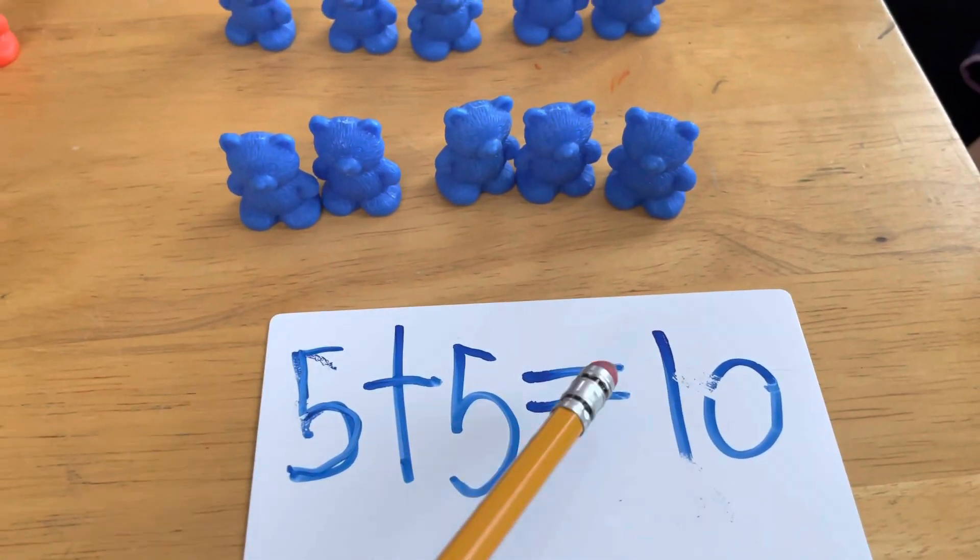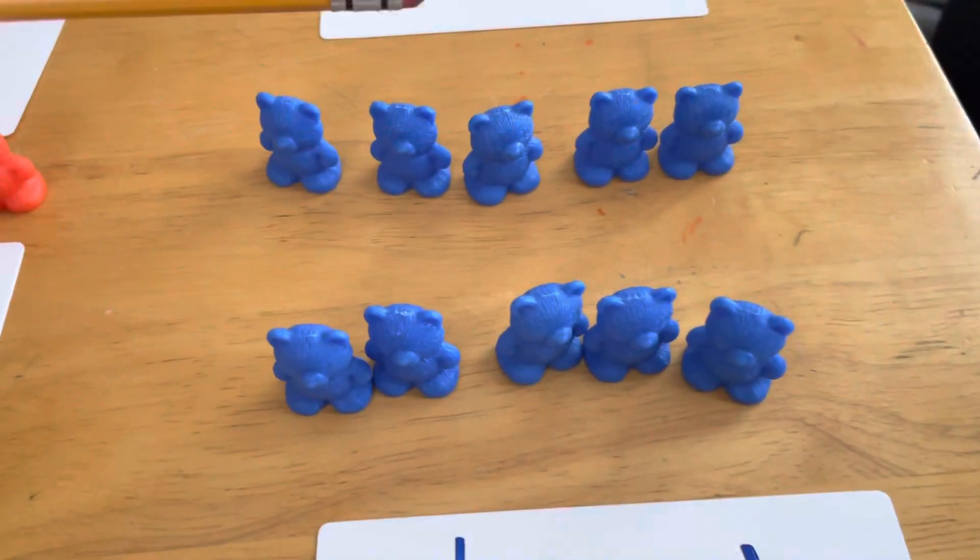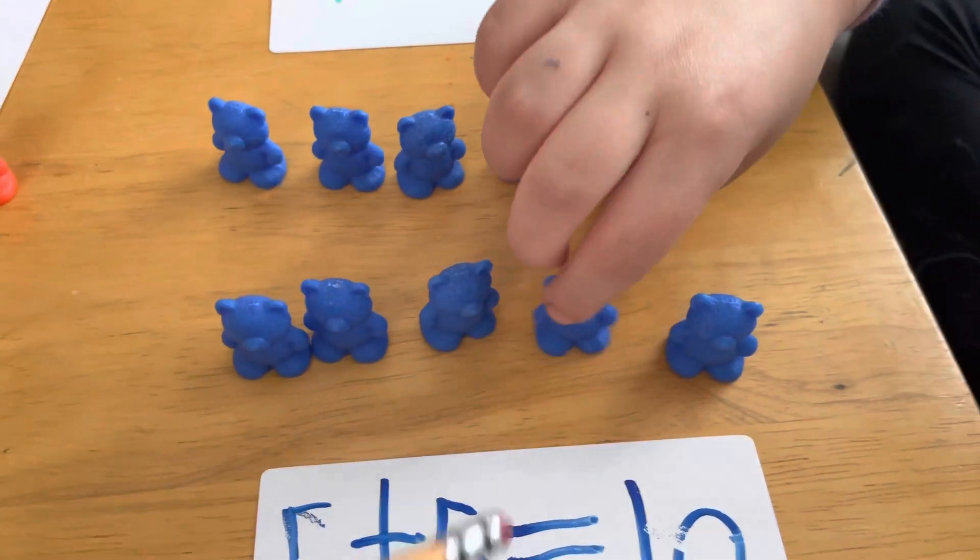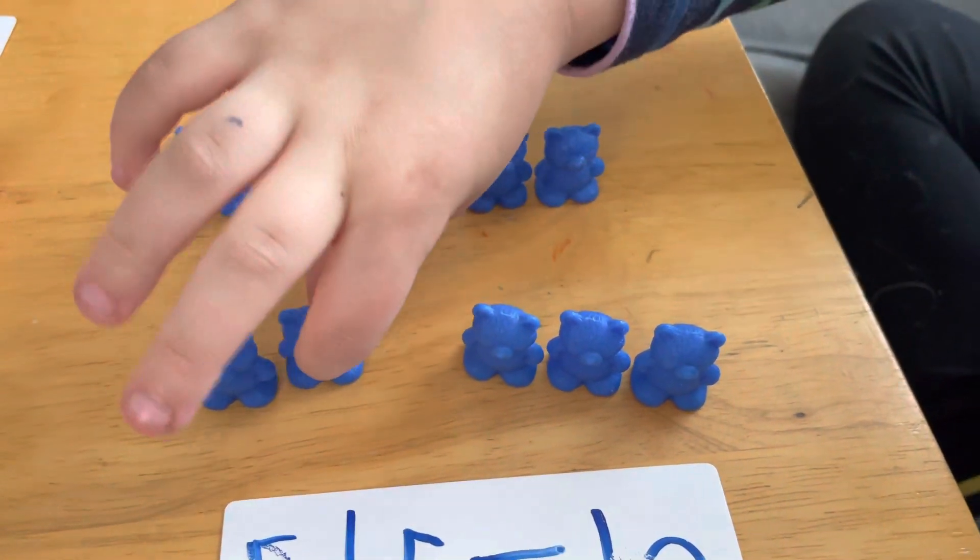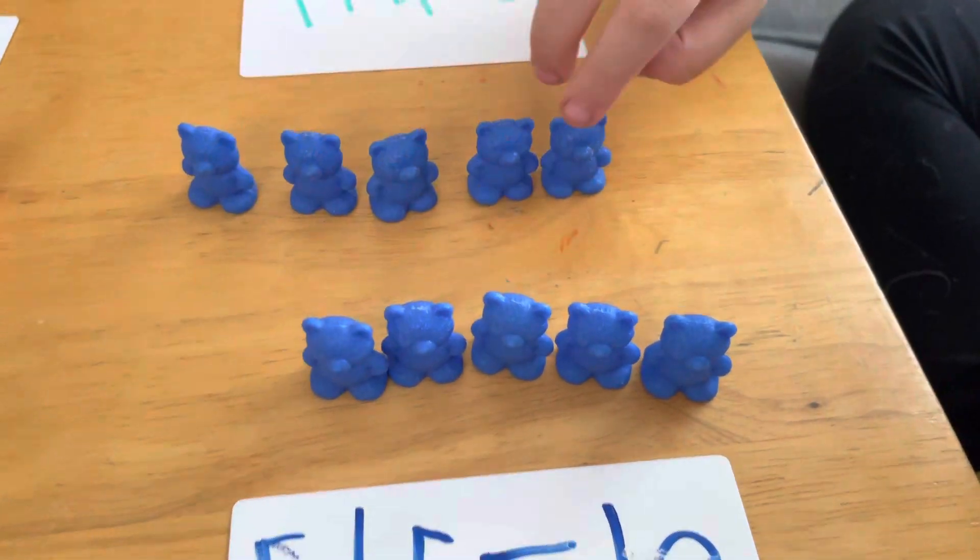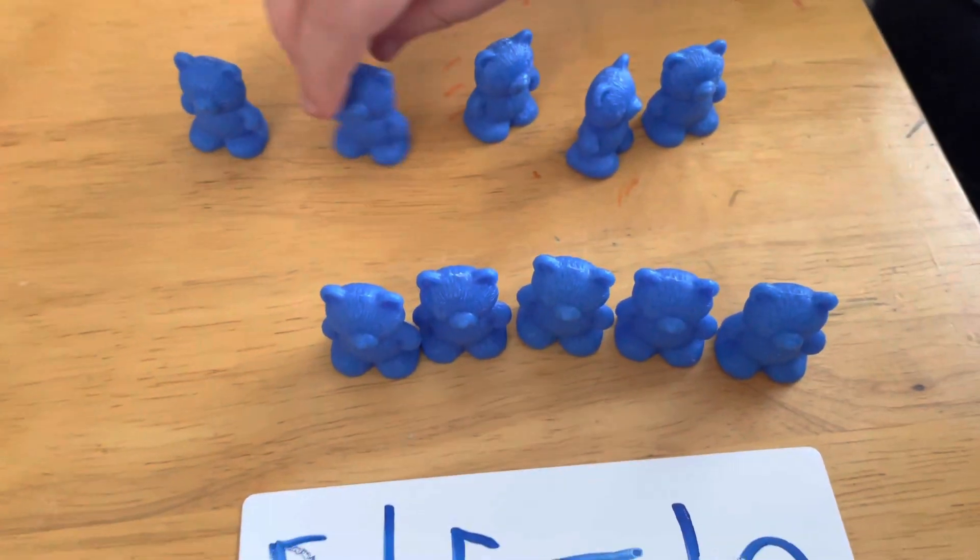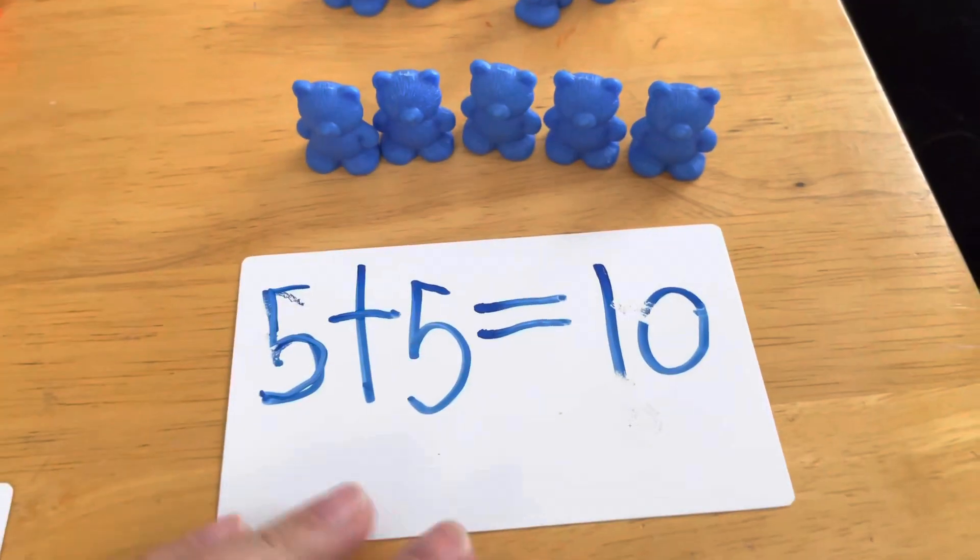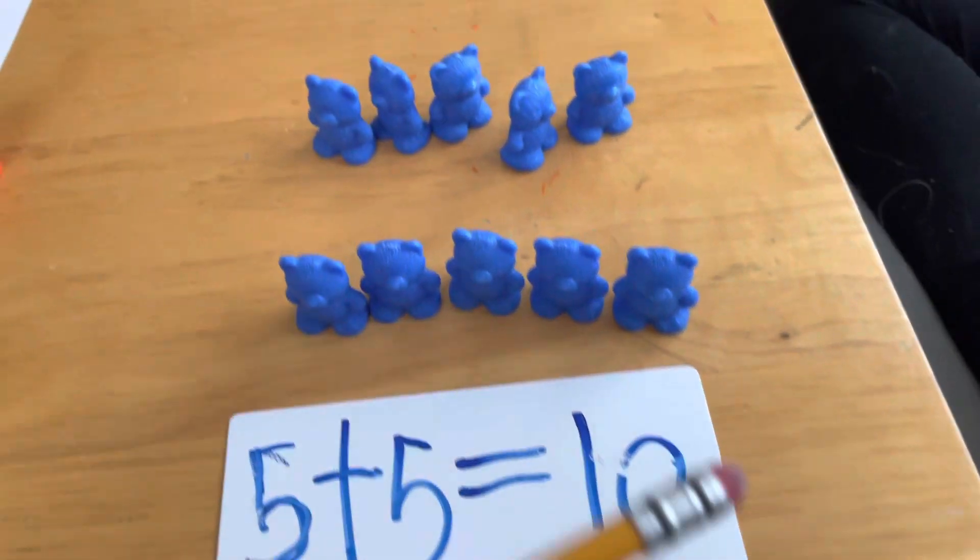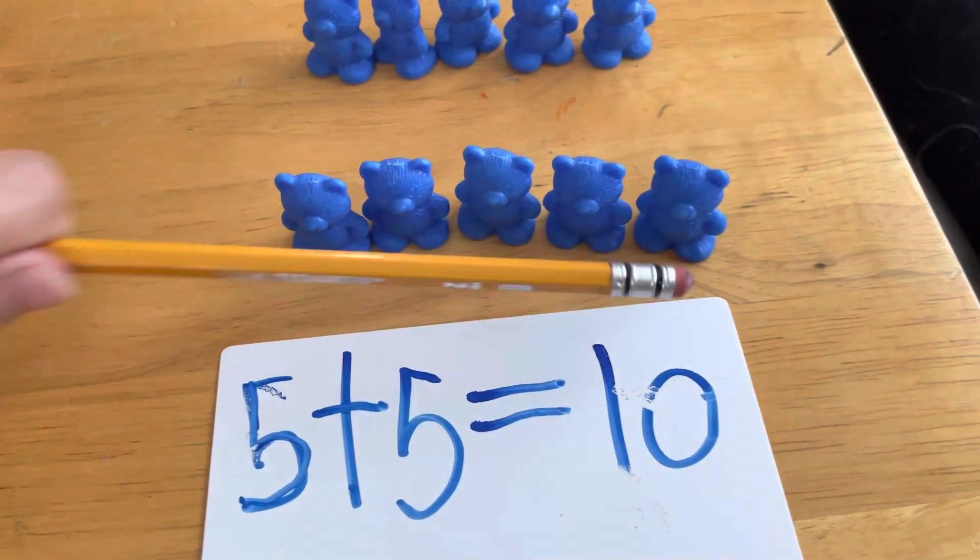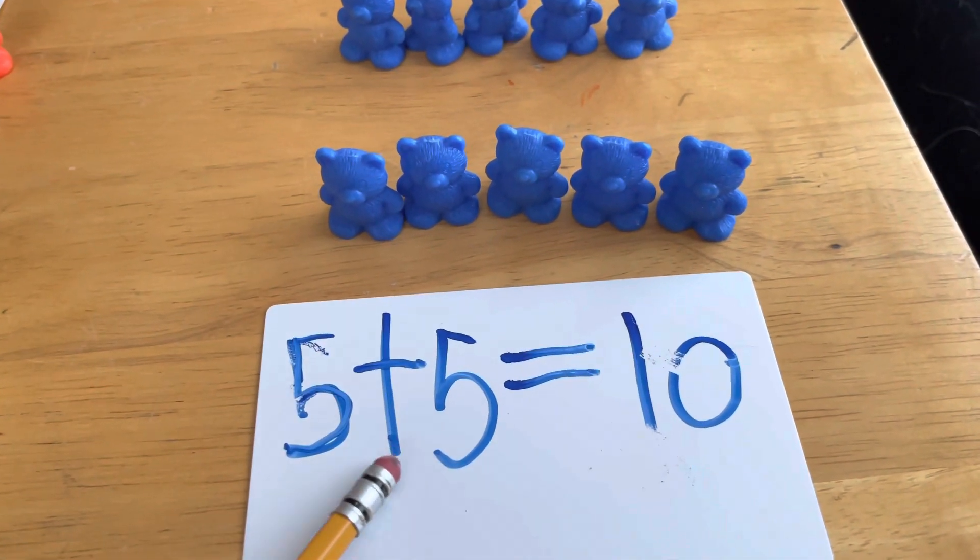Okay, ready? Five plus five equals ten. Okay, so we have one, two, three, four, five, six, seven, eight, nine, ten. Right? Okay, so there's five bears here and five here. Five plus five equals ten, and they're all bears.